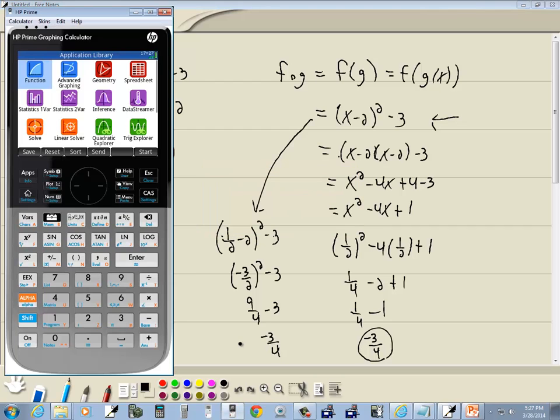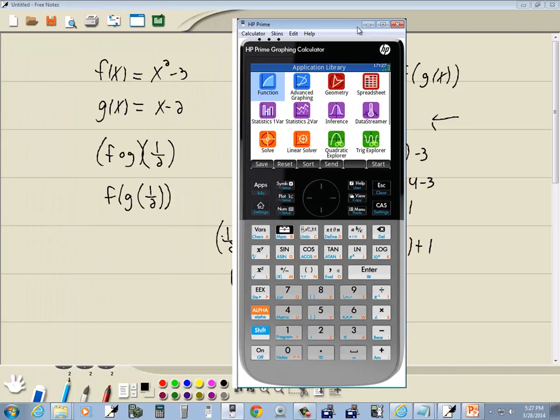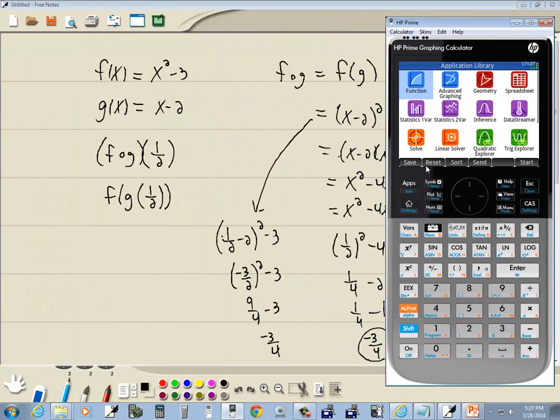Well, let's see how to do it on HP Prime. I'm going to do the apps here. If you're not, then press your apps and you'll get here. We'll go into function. If it's not highlighted, then use your arrow keys to highlight it and then press enter.